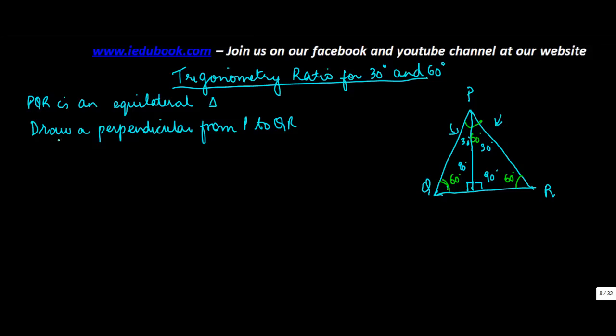Now if you observe, triangle PQ, let's call this point as M. Triangle PQM should be congruent to triangle PMR. Why?